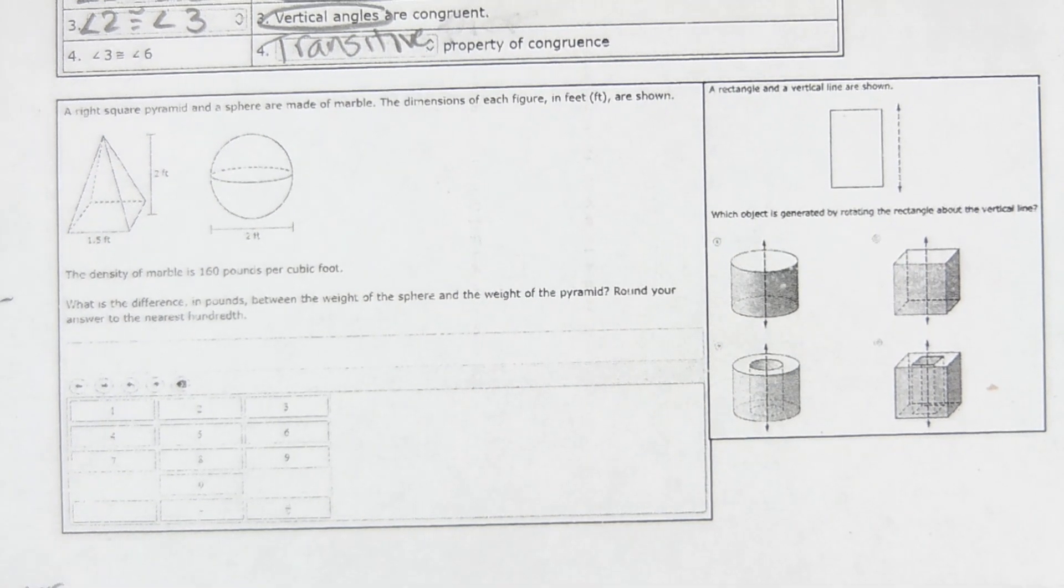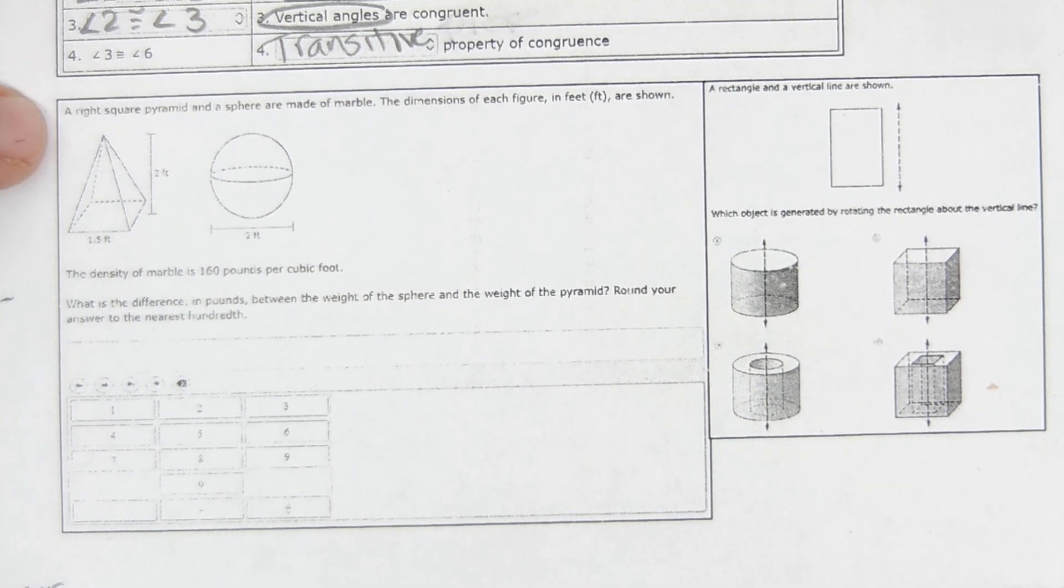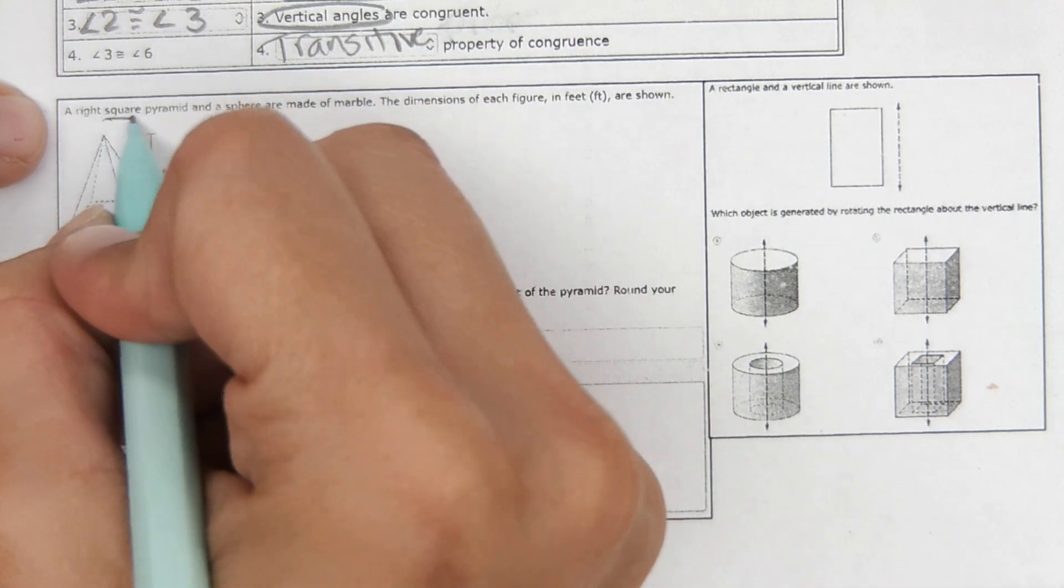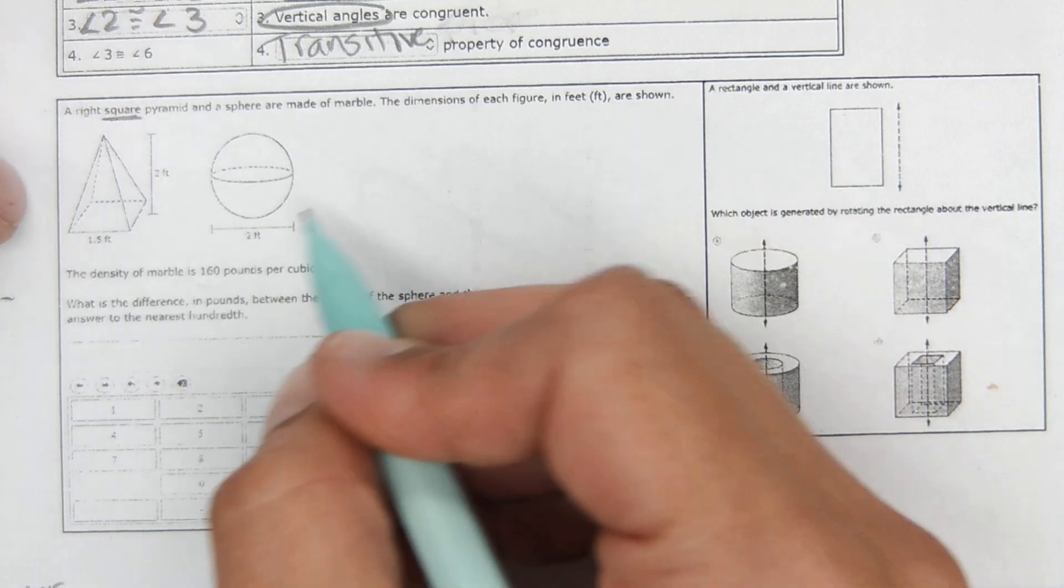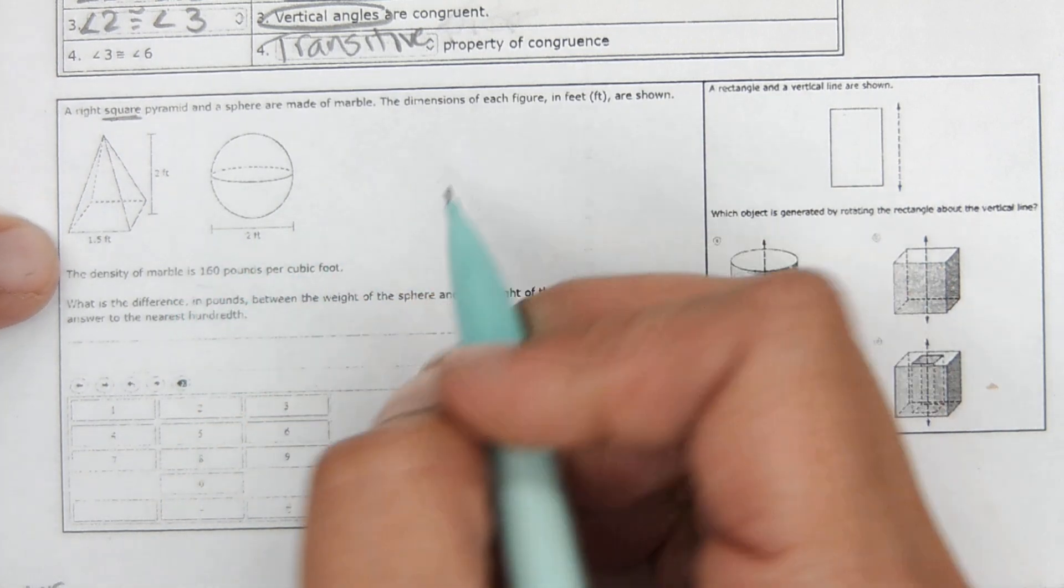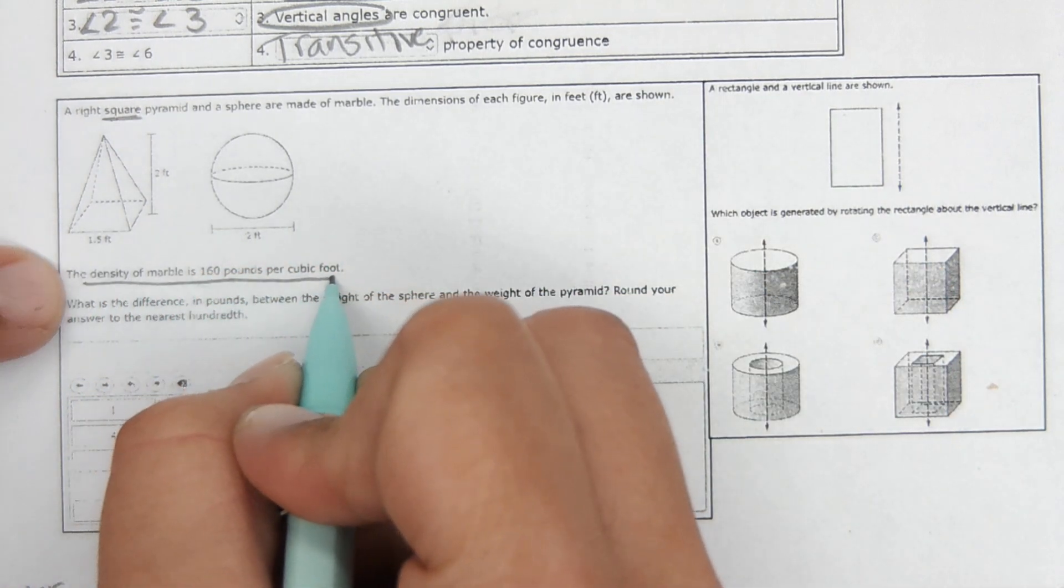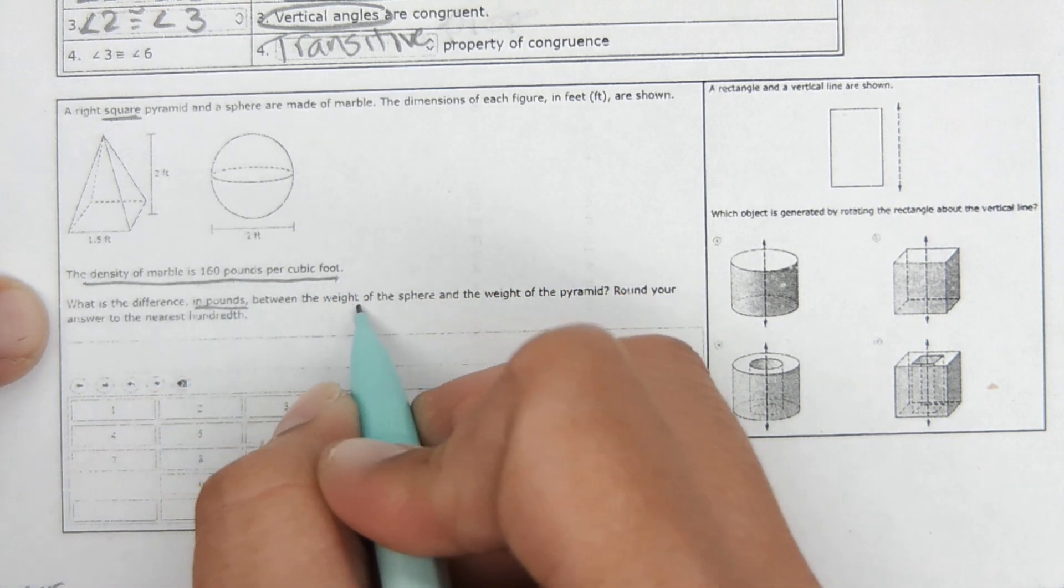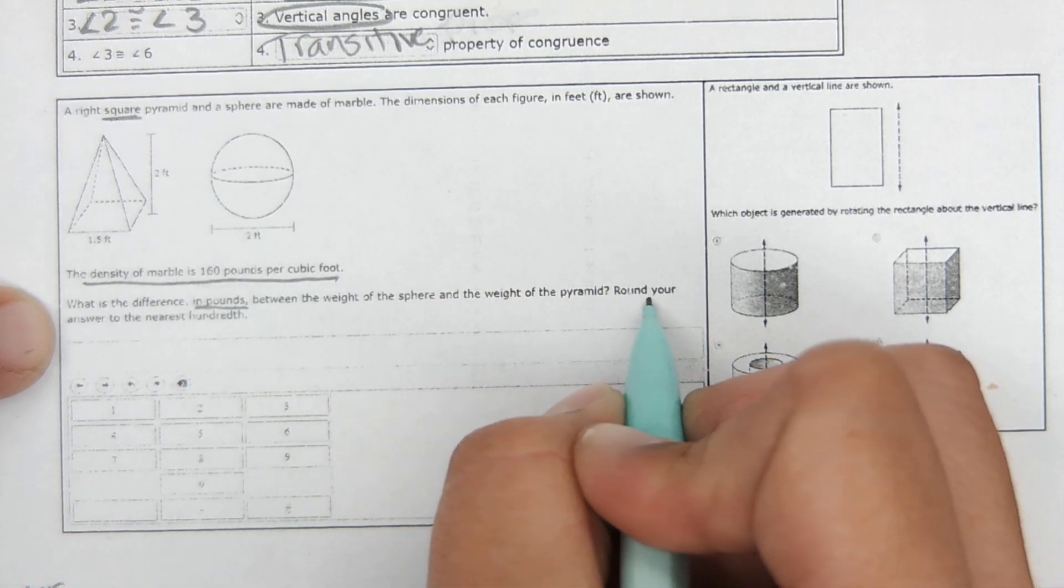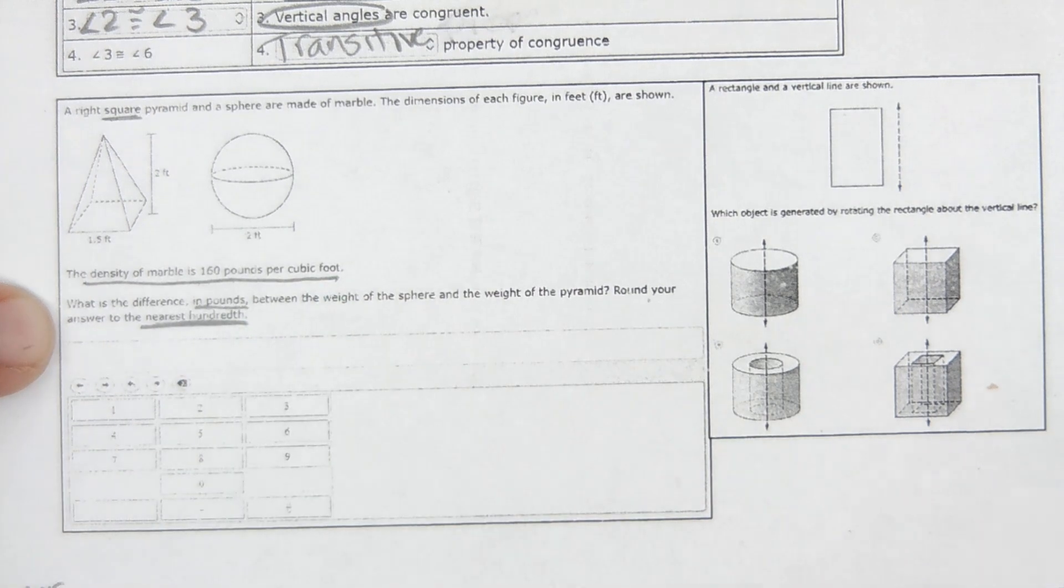So for this one, it says right square pyramid, that square part is important, and a sphere are made of marble. The dimensions of each figure in feet are shown. The density of marble is 160 pounds per cubic foot. What is the difference in pounds between the weight of the sphere and the weight of the pyramid? Round your answer to the nearest hundredth.